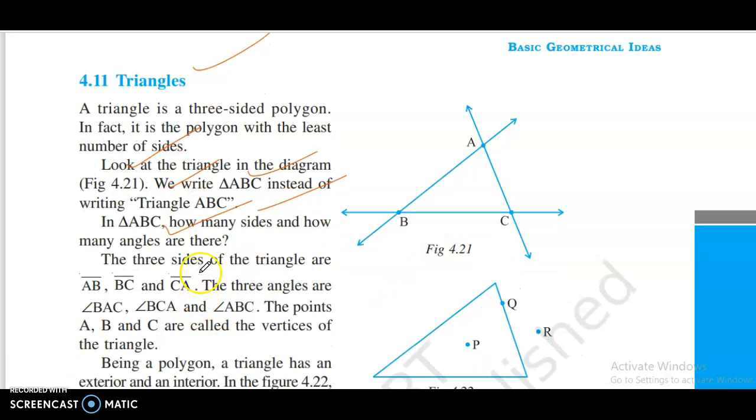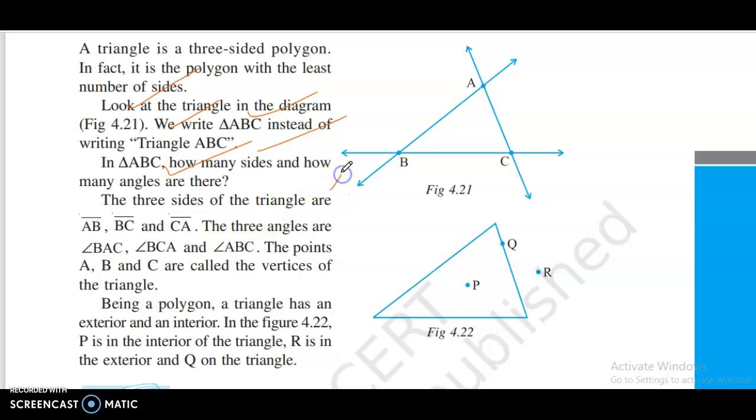The three sides of the triangle are AB, BC, and CA. The three angles are angle BAC, angle ABC, and angle BCA.